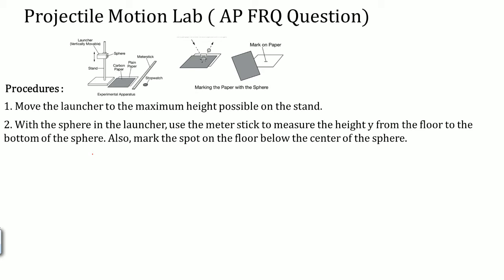With the sphere in the launcher, they use the meter stick to measure how high the floor is to the bottom of the sphere. Also mark the spot on the floor below the center of the sphere. This is the height value that is recorded on the chart. Make sure you have a step in the procedure to give you the data that you want.